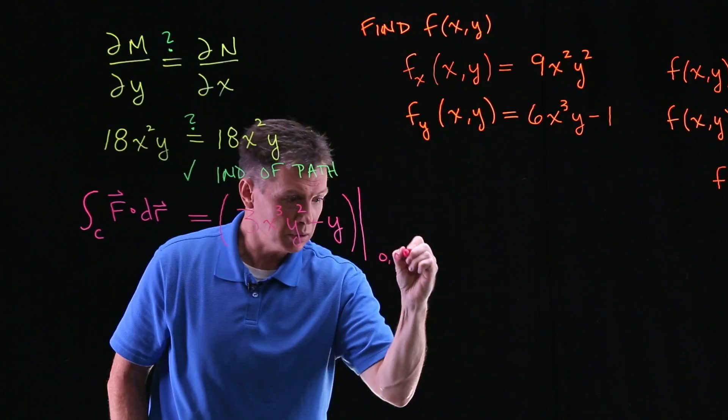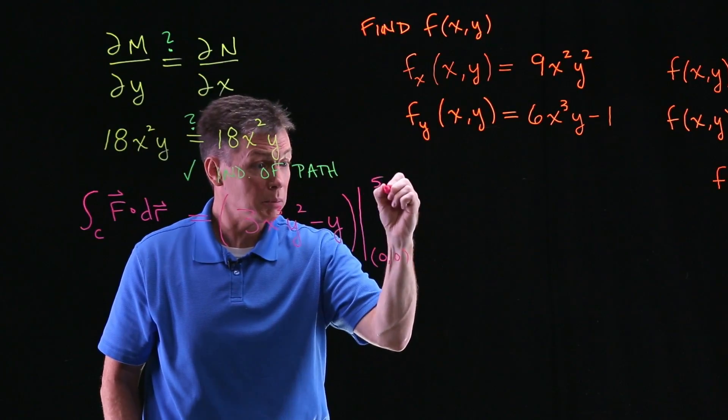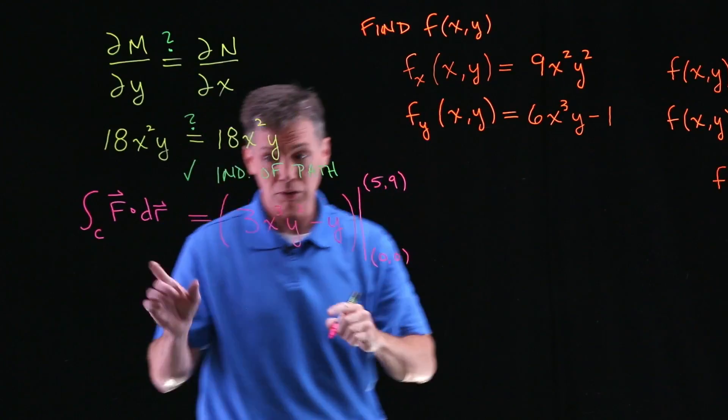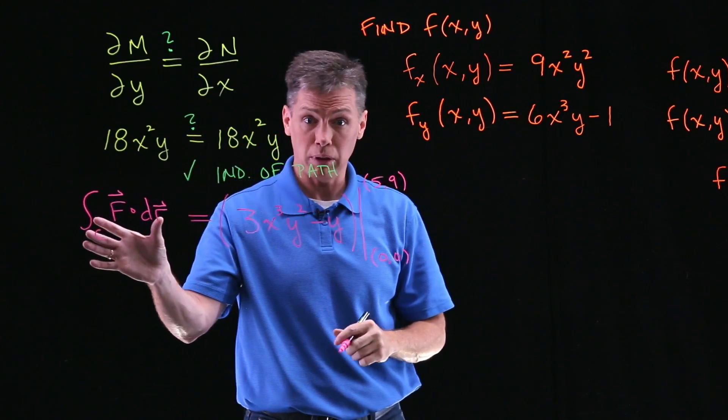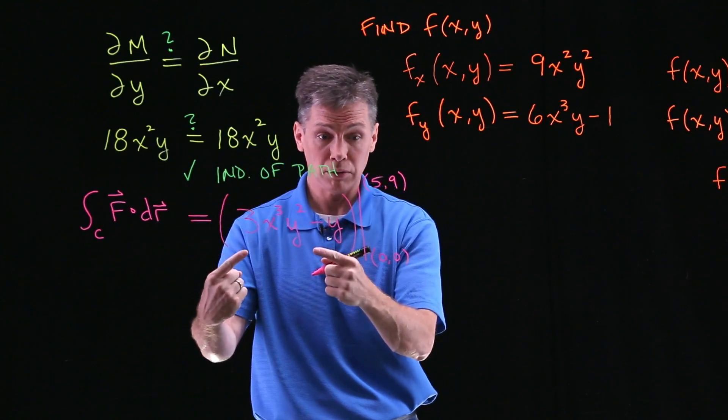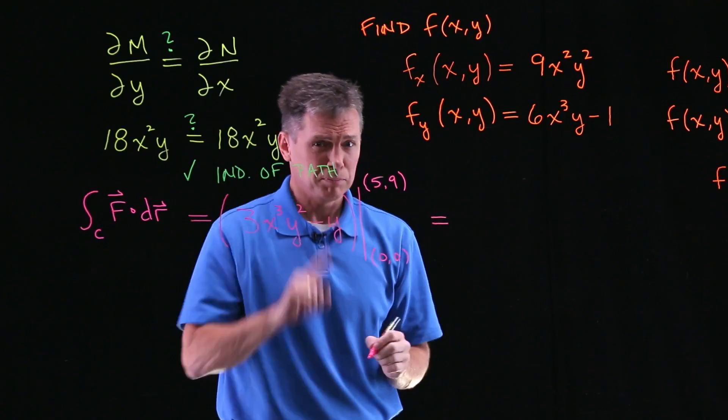And the lower limit of integration would have been that point 0,0, the P point, and my upper limit would have been the point 5,9. Again, what we capitalized on is that I'm trying to integrate capital F, we know an anti-derivative of that, that's this.